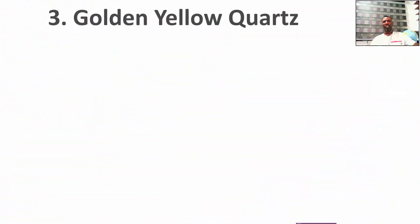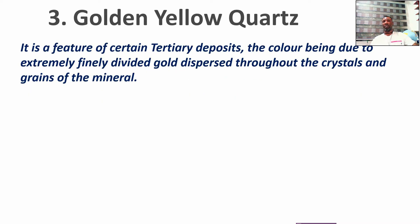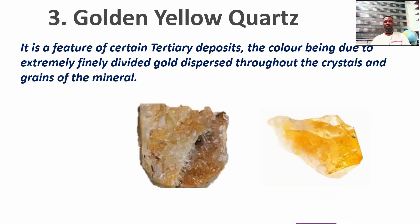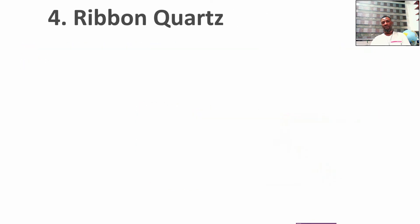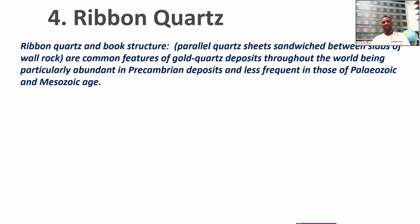Another variety is the golden yellow quartz. This is different from citrine. Yellow quartz is very rarely associated with gold, but the golden yellow quartz — as the name implies — has a color that is due to finely disseminated gold dispersed through the crystals. This is the kind of quartz you actually need to map out whenever you see it.